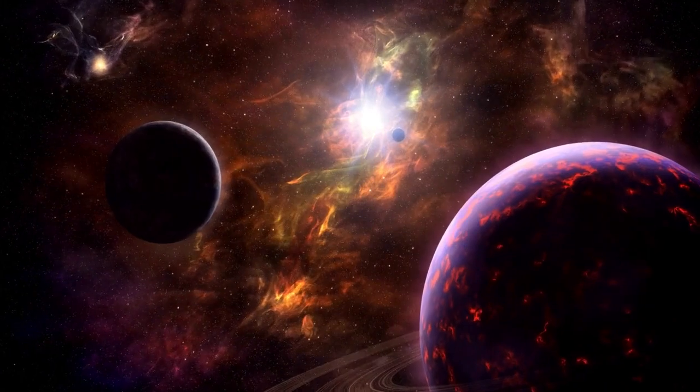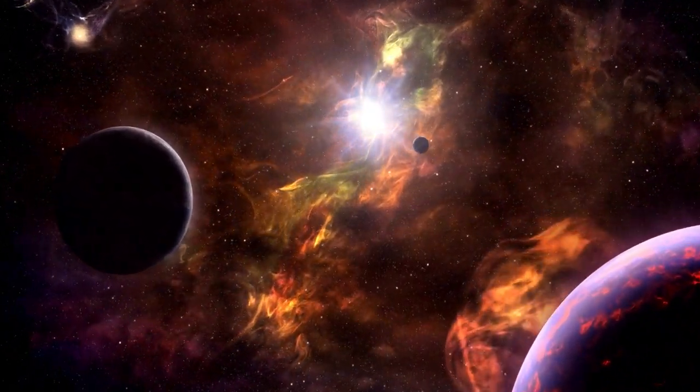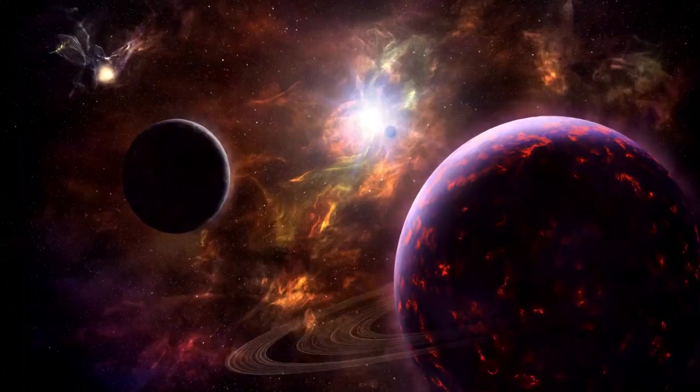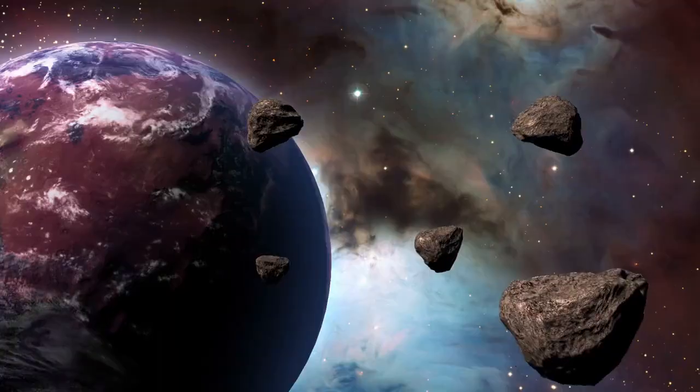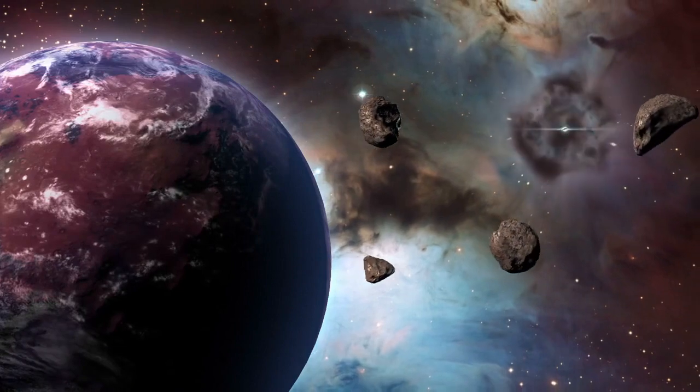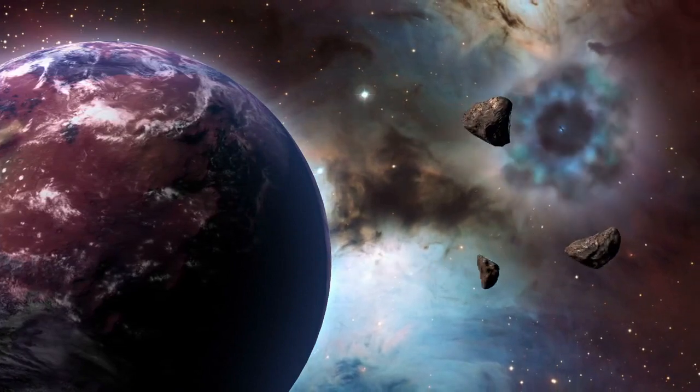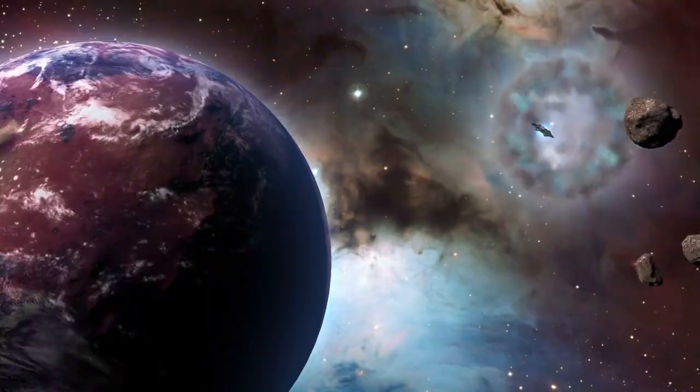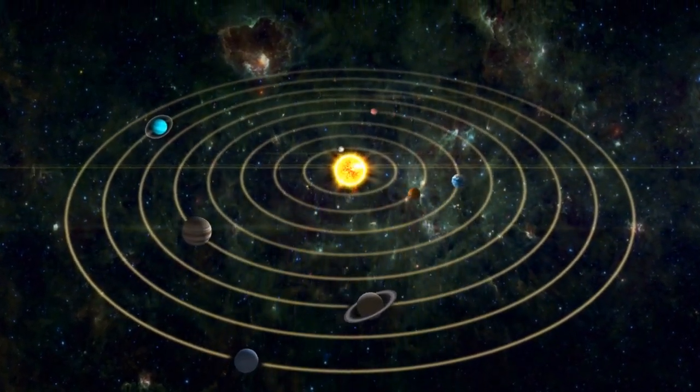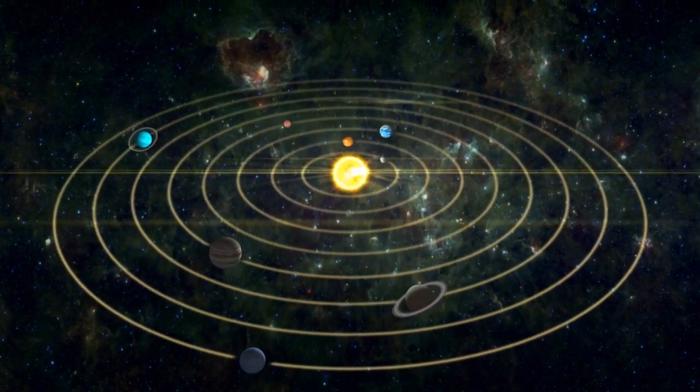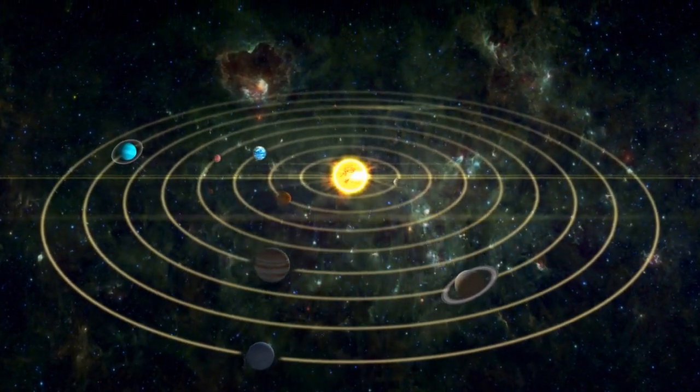Moving beyond our solar system, the fourth discovery revolves around exoplanets, planets orbiting stars other than our sun. Researchers have discovered an increasing number of exoplanets located within the habitable zone, also known as the Goldilocks zone. These planets are situated at an optimal distance from their host star, where conditions could potentially support the existence of liquid water and, consequently, life.